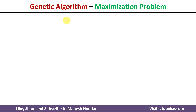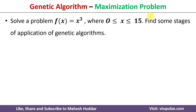In this video, I will discuss how to apply genetic algorithm to solve the maximization problem. In this case, we have been given a function f(x) = x³, with a constraint of x in the range of 0 to 15.